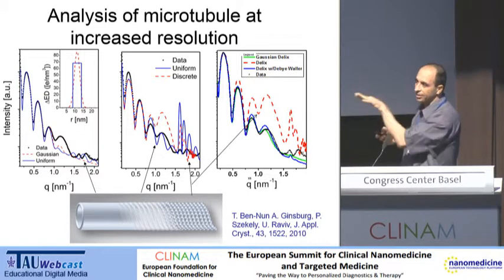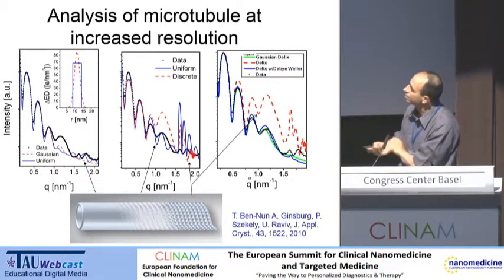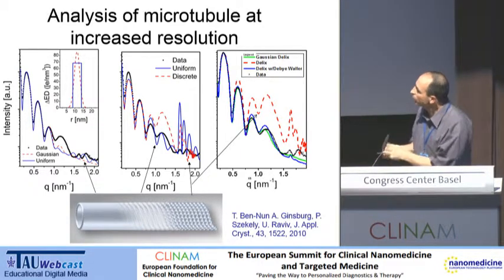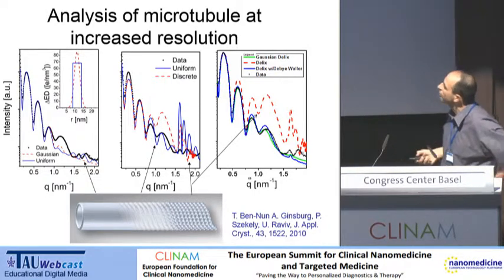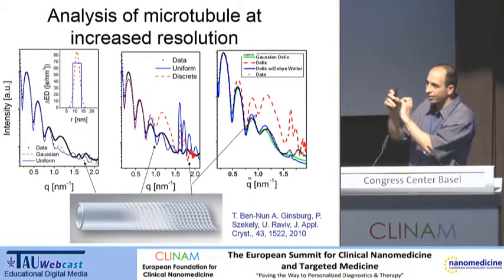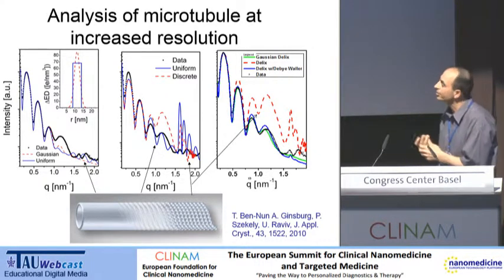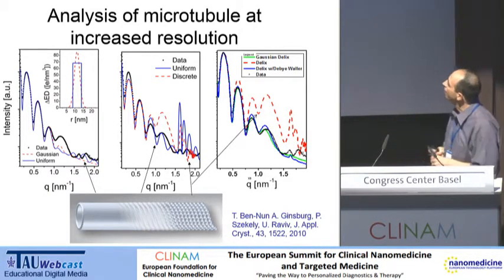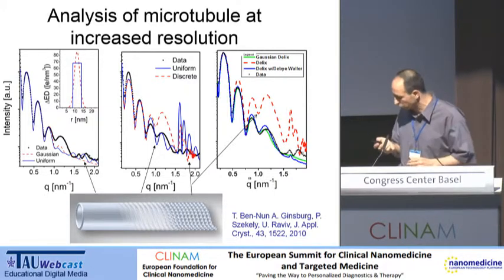We then moved to more highly resolved data, taking into account the helical nature of the tubulin assembly, and you can see additional features — the blue curve captures more information. This was not good enough, so we broke the helical structure into spheres in the helical lattice. The red curve has the same shape as the data but the relative intensities were incorrect. To improve that, we took into account thermal fluctuation, which you can do with the software we developed, giving the blue and green curves that more or less fit.